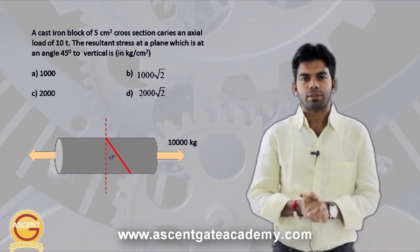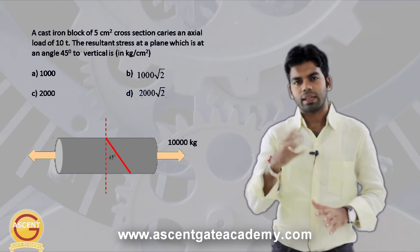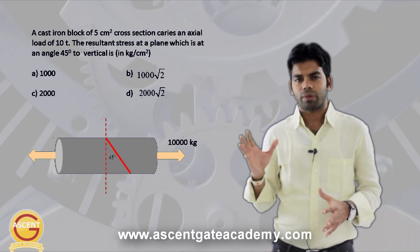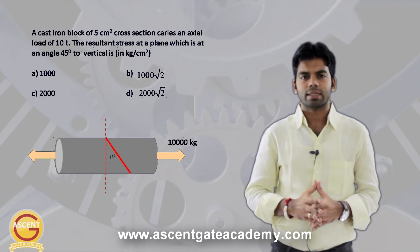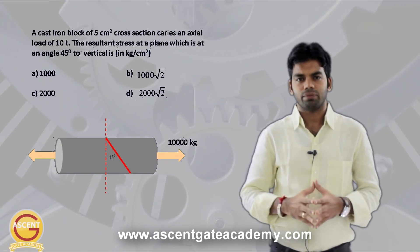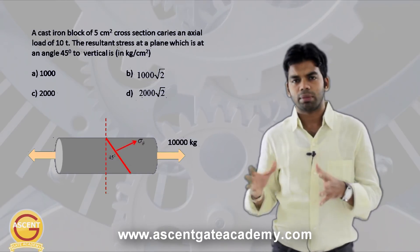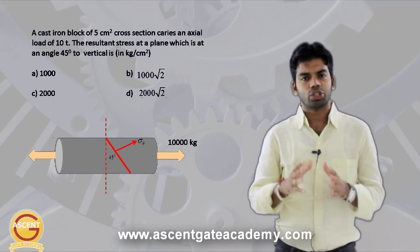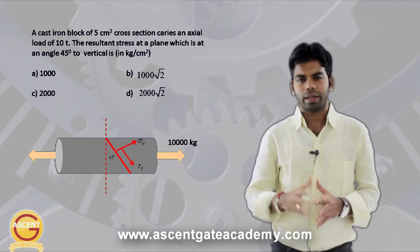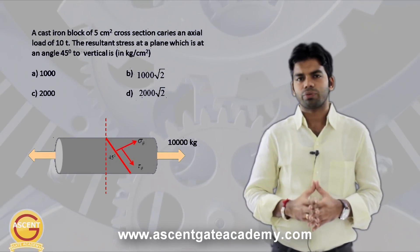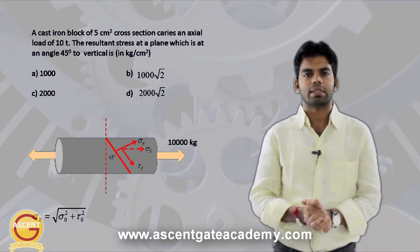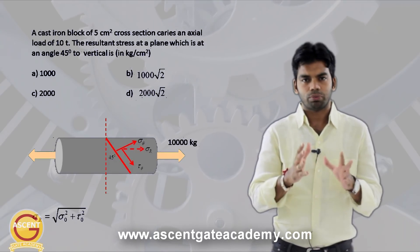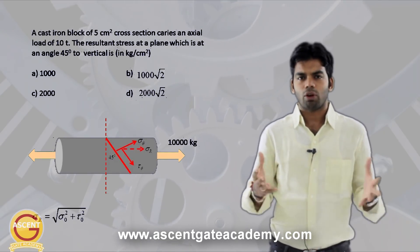First I will tell you the conventional method, and then I will tell you the shortcut. The conventional method says that whenever we want to determine the resultant stress at any plane, first we determine the normal stress sigma_theta, then the shear stress tau_theta, and then the resultant is the square root of sigma_theta squared plus tau_theta squared.